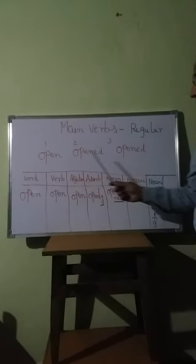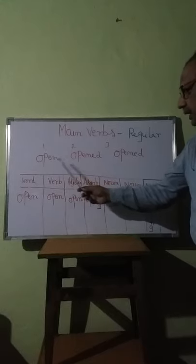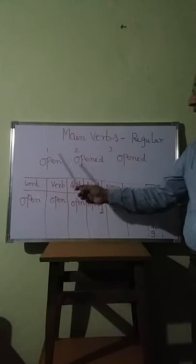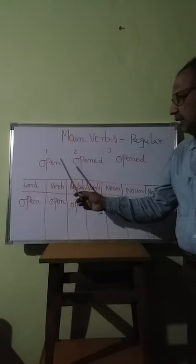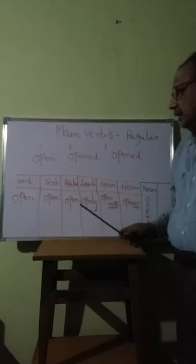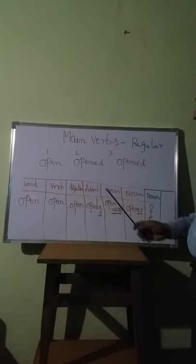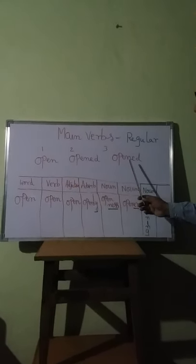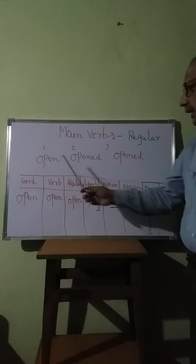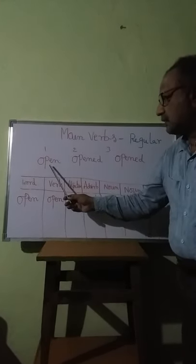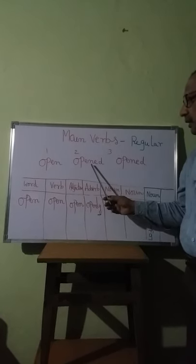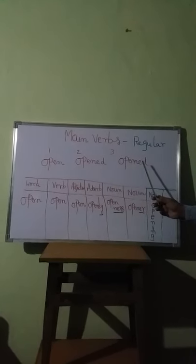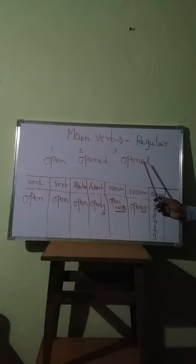Now, look at the blackboard. Open, opened, opened. These are called the three forms of the verb 'open.' The second form is 'opened,' and the third form is called 'opened.' The first form is called present tense, the second form is called past tense, and the third form is called past participle.